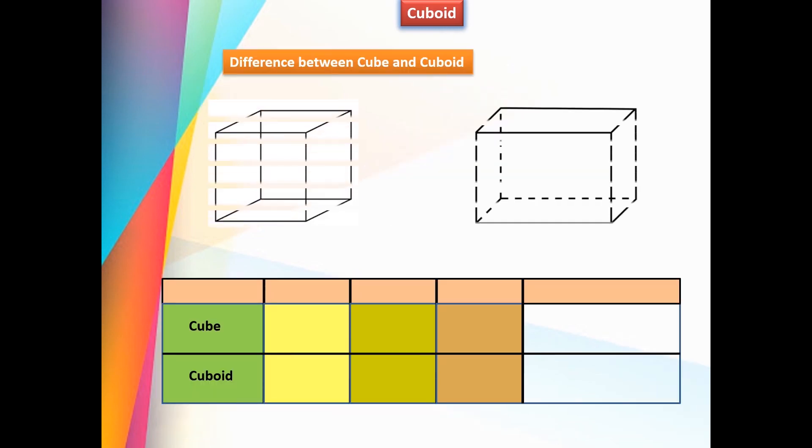Difference between cube and cuboid: Number of surfaces in a cube is 6, cuboid also 6. Edges in cube 12, in cuboid also 12. Vertices: 8 in cube and 8 in cuboid.